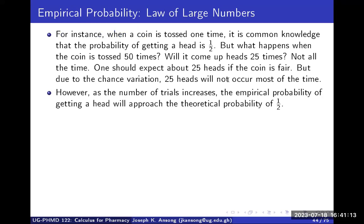For example, when a coin is tossed one time, the probability of getting a head is one over two. It doesn't mean that if I toss a coin 50 times, I'm going to get exactly 25 heads showing up — not necessarily. Because you're going to have some variations, you'll probably get 24 heads, 26, and so on, due to chance variations.